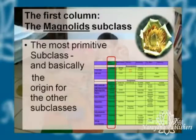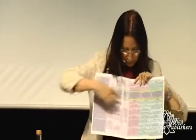The magnolias are the most primitive subclass, and it is called the magnolids or the Magnoliidea. This is just different naming, but anything which ends with 'ids' or 'da' means that it is a subclass. In this subclass you have many orders and families.